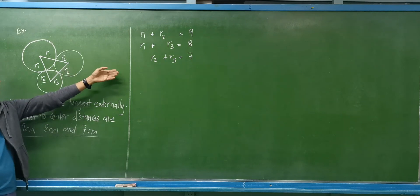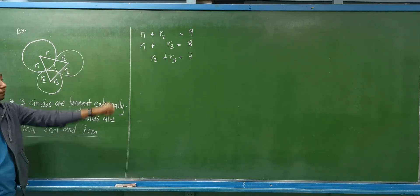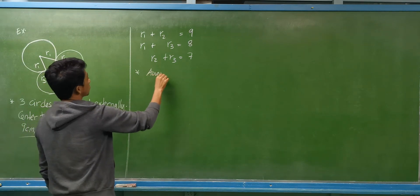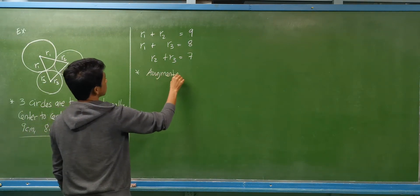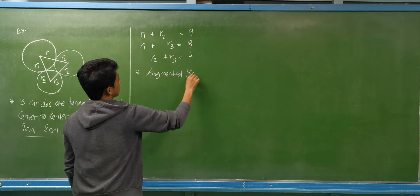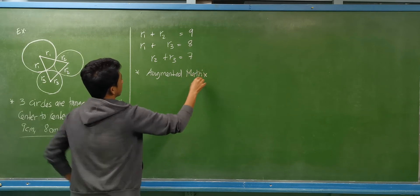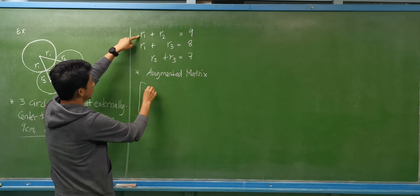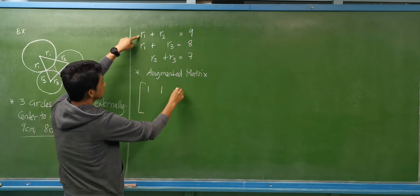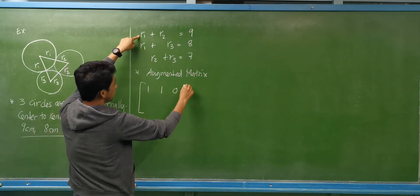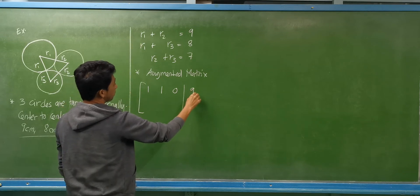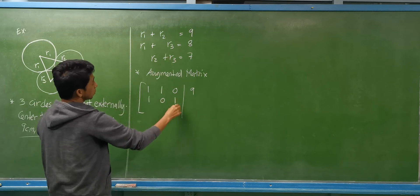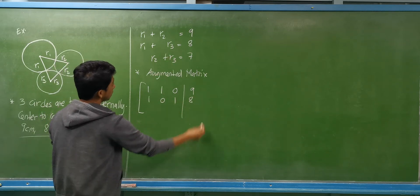So these are our equations. Let us set up the augmented matrix. For the augmented matrix, we need the coefficients. The first row is 1, 1, 0, then the constant 9. The second row is 1, 0, 1, and the constant 8.